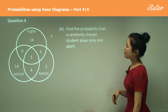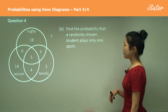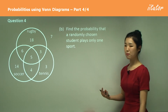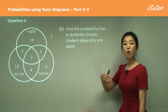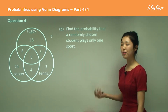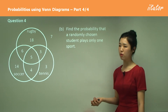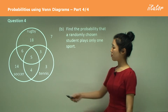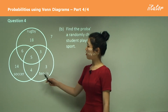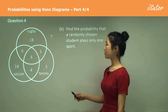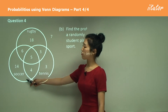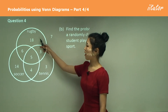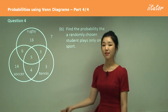Now for part B: find the probability that a randomly chosen student plays only one sport — meaning they only play soccer, or only play tennis, or only play rugby, but not two or three sports. We know the probability of only soccer is 14 out of 60, only tennis is three out of 60, and only rugby is 18 out of 60.